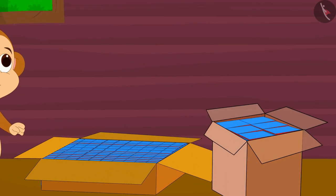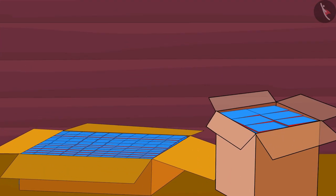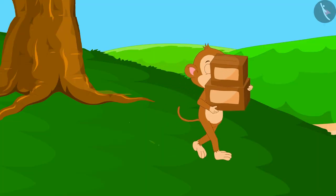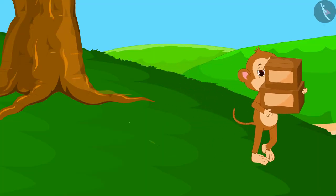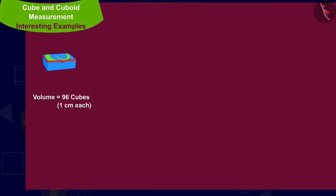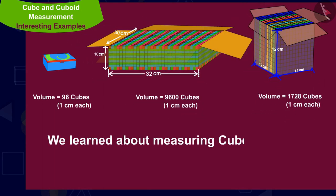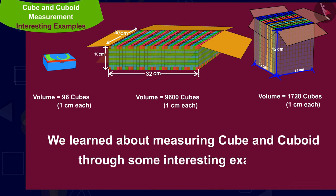Babban filled 118 compass boxes in those boxes and began walking towards the village. In this video we learned about measuring cube and cuboid through some interesting examples. In the next video we will look at some of the misconceptions related to this topic.